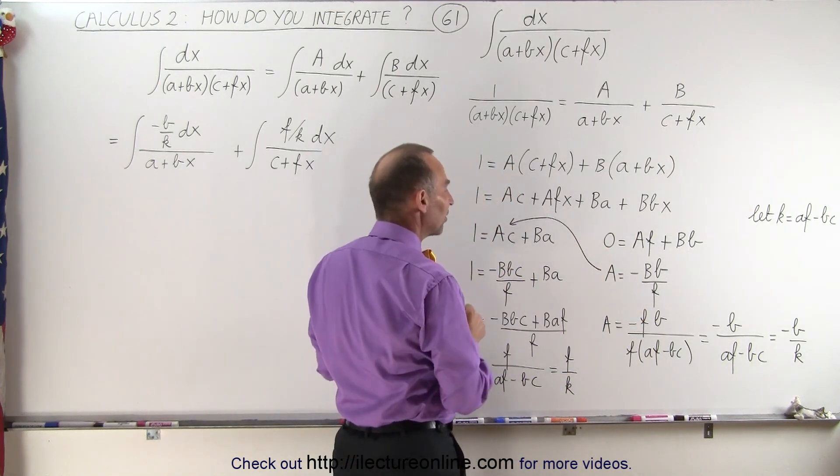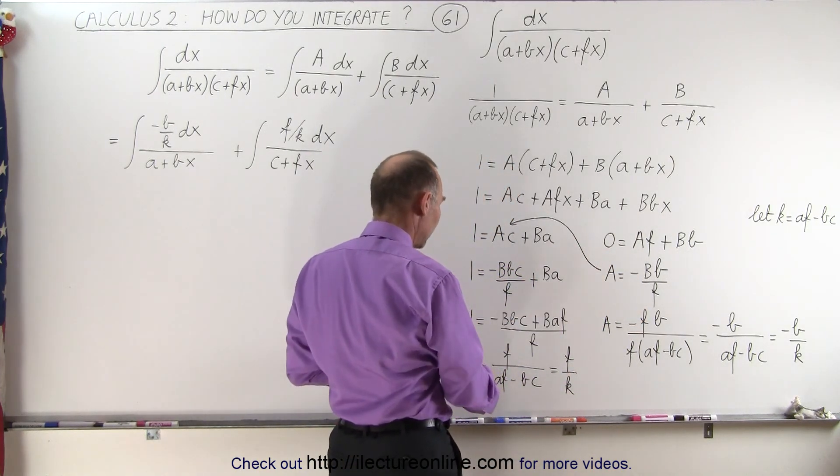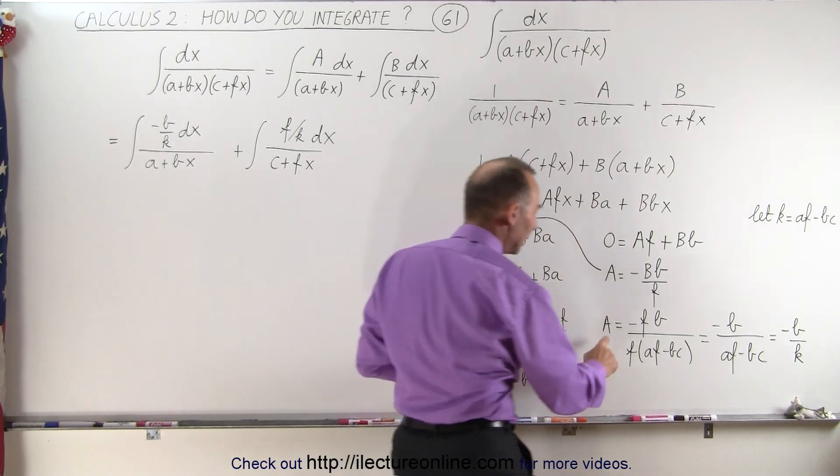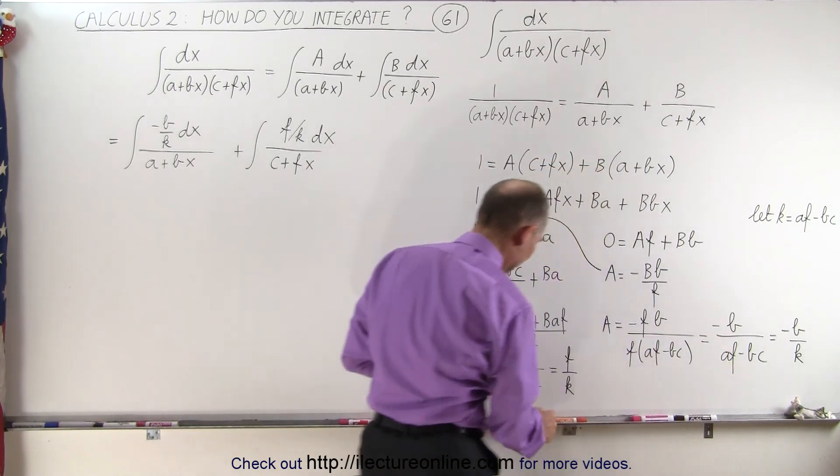Then if we solve those equations simultaneously, we end up with B being equal to -f over (af - bc), and A being equal to -b over (af - bc).